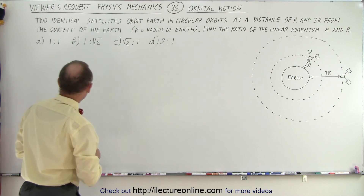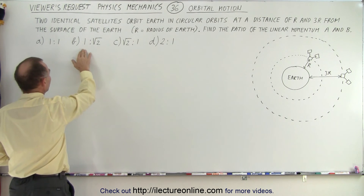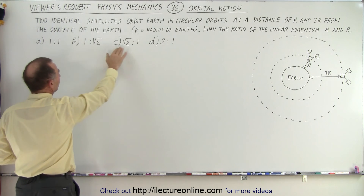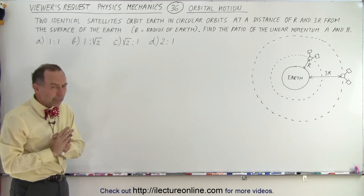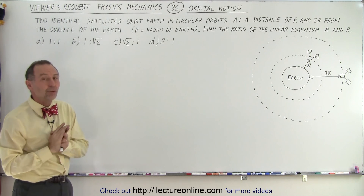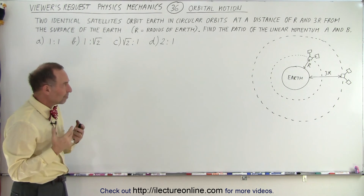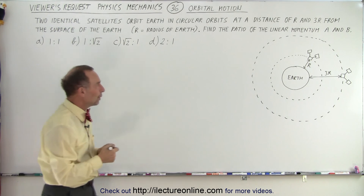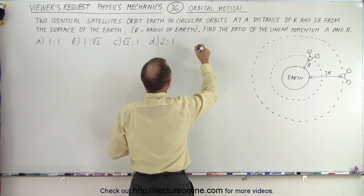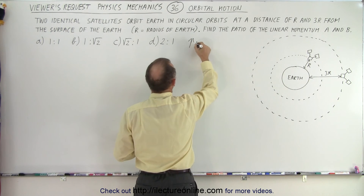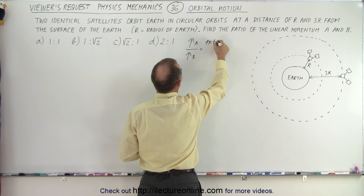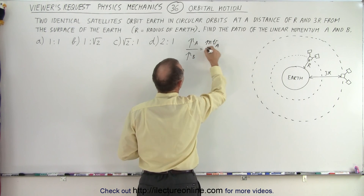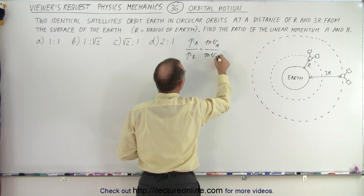They give us four answers: 1 to 1, 1 to the square root of 2, the square root of 2 to 1, or 2 to 1. So two things we need to do first. The ratio of the linear momentum is the linear momentum of A relative to the linear momentum of B, which means MVA divided by MVB.